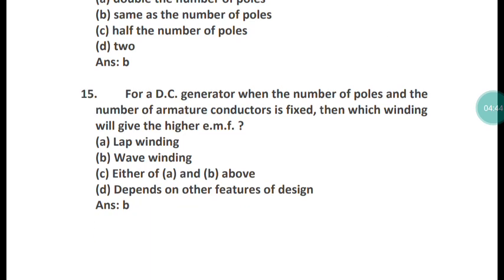Question 15: For a DC generator, when the number of poles and the number of armature conductors is fixed, which winding will give the higher EMF? The correct answer is option B — wave winding will give the higher EMF.